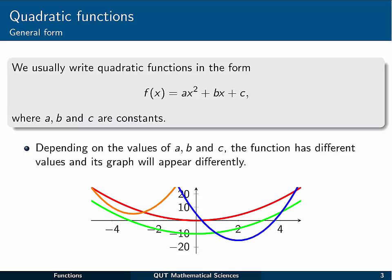We usually write quadratic functions in this form that you see right here: f of x equal to ax squared plus bx plus c, where a, b and c are constants. We'll generally be dealing with real constants. And depending on the values of a, b and c, the function has different values and its graph will appear differently.